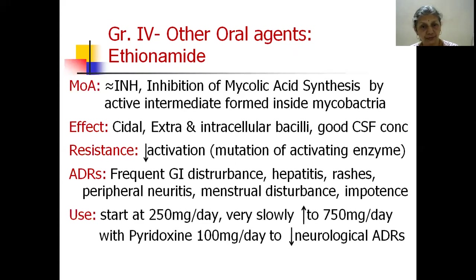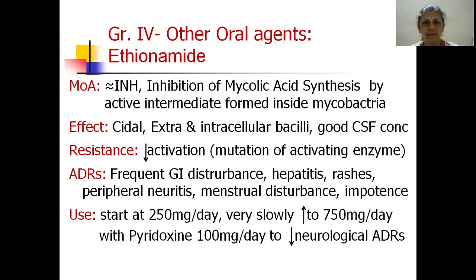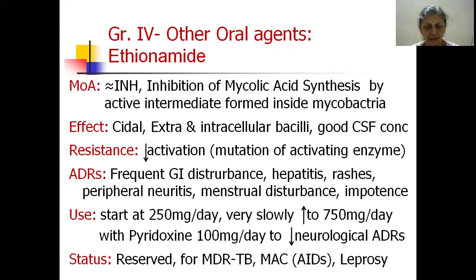Because of these adverse effects, ethionamide needs to be started at a low dose of 250 mg per day and very gradually increased to 750 mg per day, which is the therapeutic dose for tuberculosis. Because it can cause peripheral neuritis, whenever ethionamide is used, pyridoxine 100 mg per day must be given throughout the treatment regimen to minimize neurological adverse effects. It is reserved for MDR-TB and is also useful for Mycobacterium avium complex in AIDS patients, and is a reserved drug for leprosy as well.